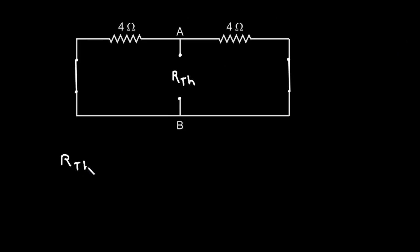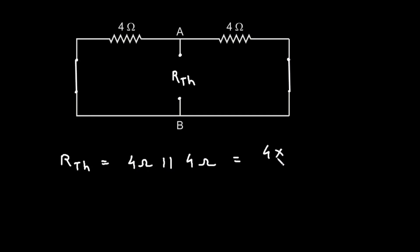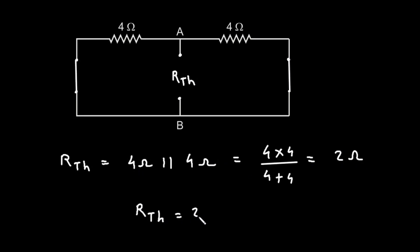Now we can easily find the value of RTH. RTH is equal to: as we can see, this 4Ω is in parallel with this 4Ω. If we stretch this terminal, they are connected in parallel. So we can write 4Ω parallel with 4Ω, which is 4×4 divided by 4+4. When both values are the same, the equivalent is half, so it will be simply 2Ω. Therefore, RTH is equal to 2Ω.